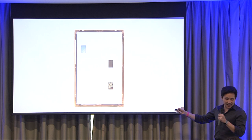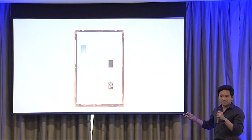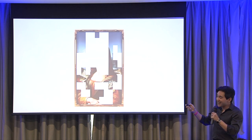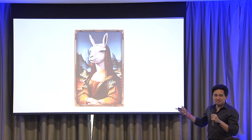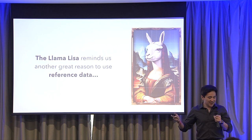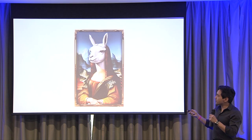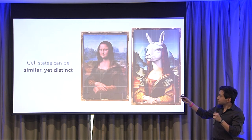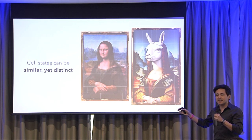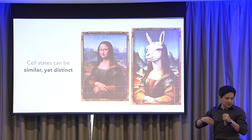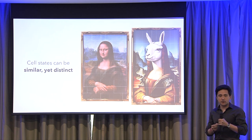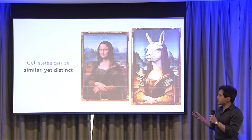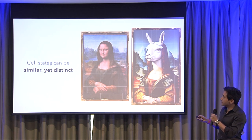Can anyone identify this? This is actually the Llama Lisa, which reminds us of another great reason to use reference data — if you have an incomplete dataset, you can be fooled. It may look like the cell state you're trying to describe. That's why bringing in public data and cross-referencing information between labs and publications can be so helpful for reproducibility and confirmation that the cell states you're seeing are the same or maybe even distinct. Making these comparisons is important because while they share some similarities, they're not exactly the same thing.